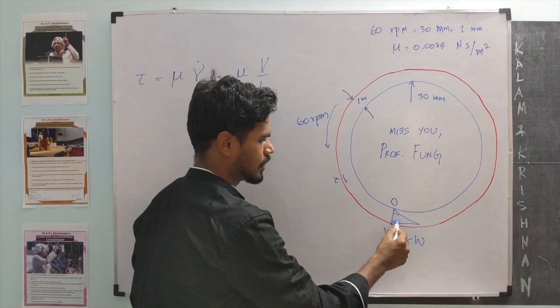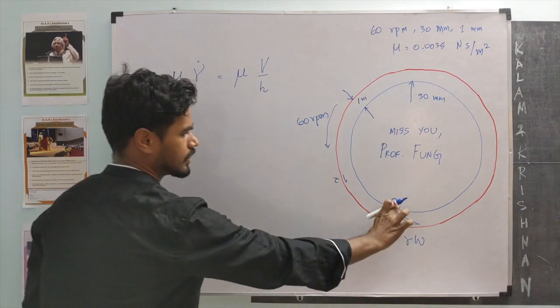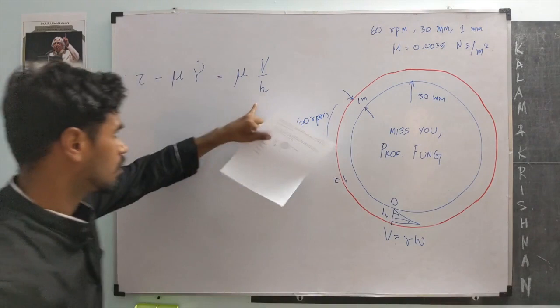And this gradient is essentially velocity at the outer wall divided by the distance over width it changes, h. That is all there is to this problem.